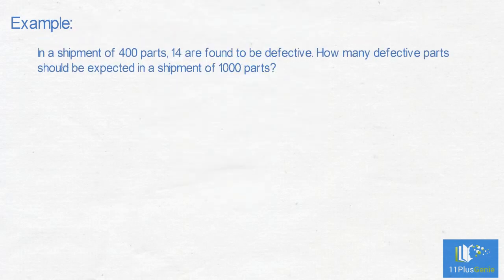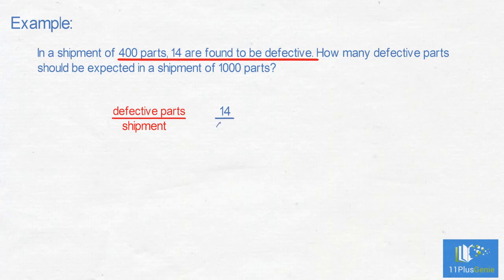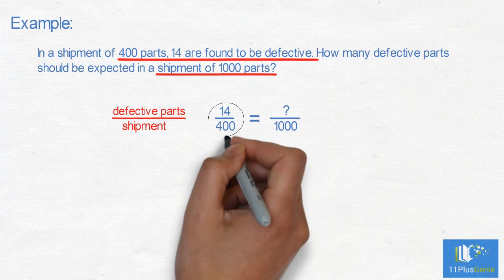Example: In a shipment of 400 parts, 14 are found to be defective. How many defective parts should be expected in a shipment of 1000 parts? As a fraction, this will be the defective parts over the shipment: 14 defective parts in a shipment of 400 parts. We must find the number of defective parts in a shipment of 1000. Our next step is to simplify this ratio.